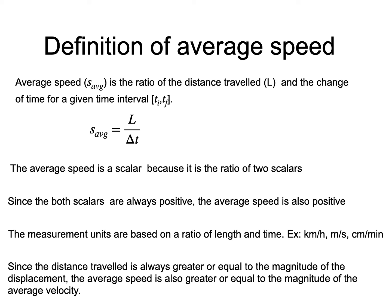Since the distance traveled is always greater or equal to the magnitude of the displacement, the average speed is also greater or equal to the magnitude of the average velocity.